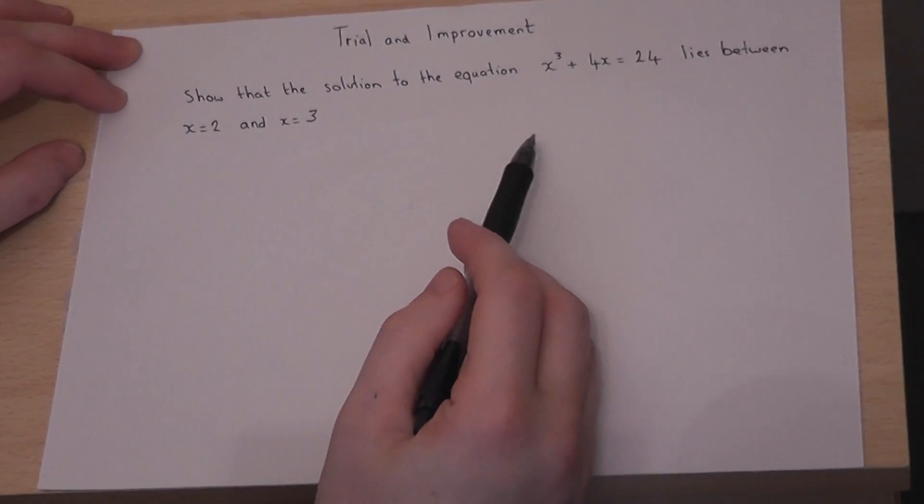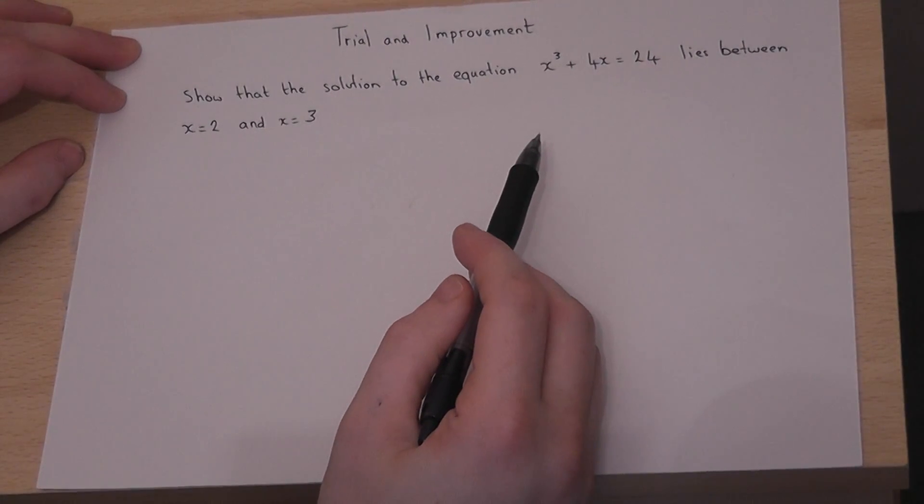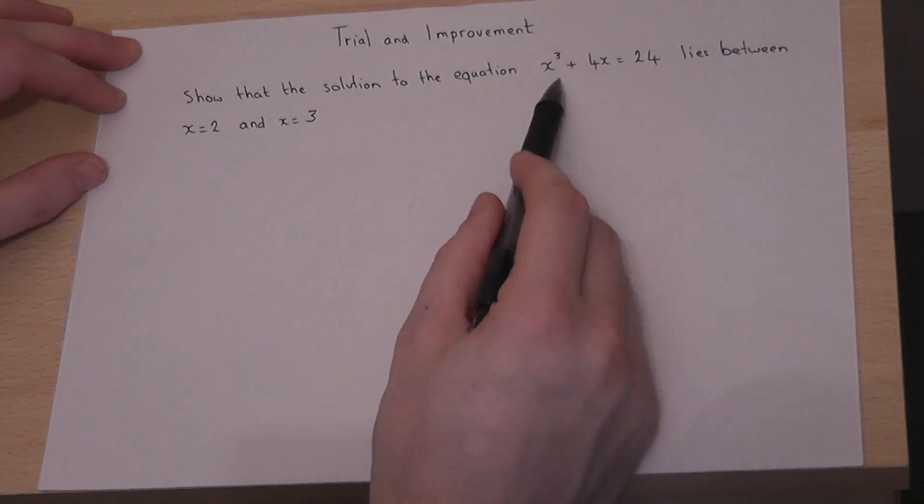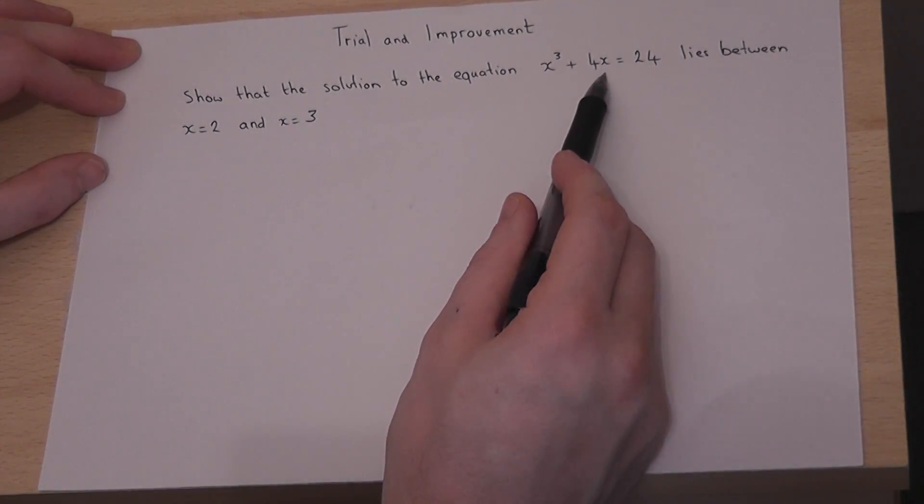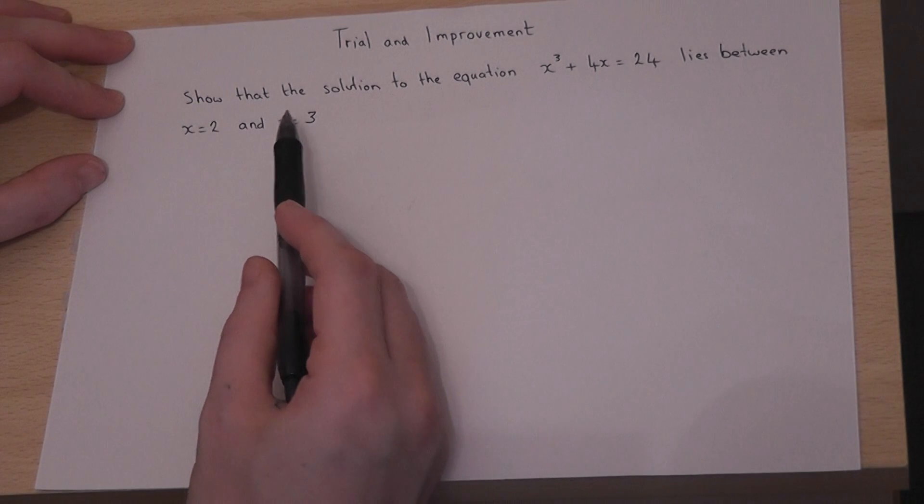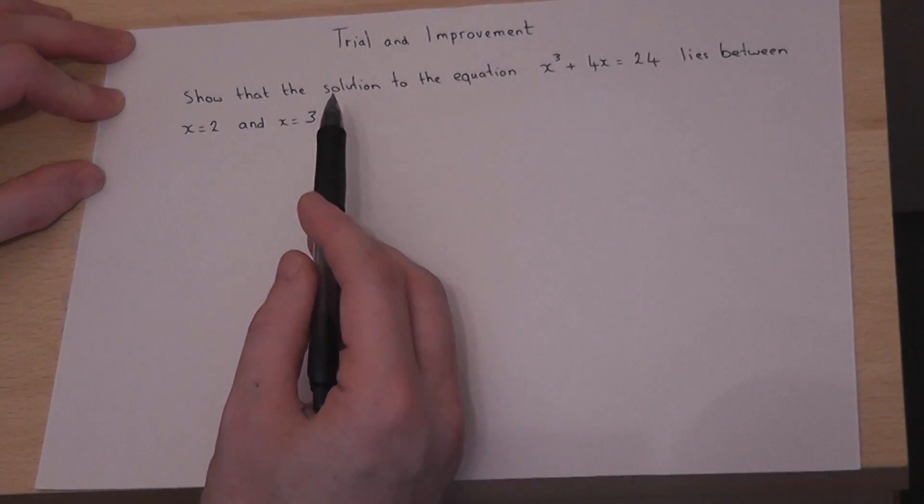This concise video shows a typical exam-style question on trial and improvement. You're given an equation, and you need to show that the solution to this equation lies between two values. It does not ask you to actually find the solution.